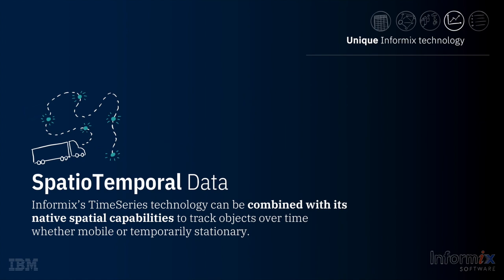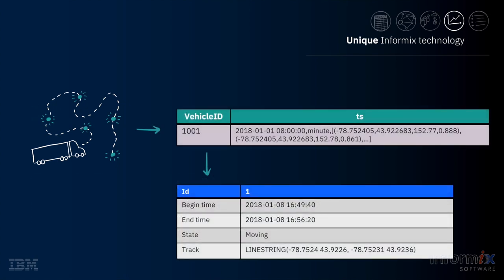Time Series is part of the foundation of Informix's spatial-temporal tracking and analysis technology. This technology can be used to track a single object as it moves, as well as the intersection and proximity of multiple objects over time. With this technology you can ask difficult questions like: what was the state of a vehicle at a particular moment in time, or which trucks were within two miles of the Mall of America on January 8, 2018, between 2:55 and 3:15 PM.